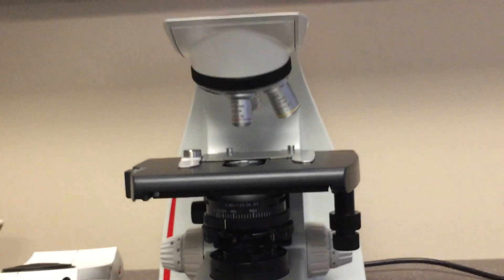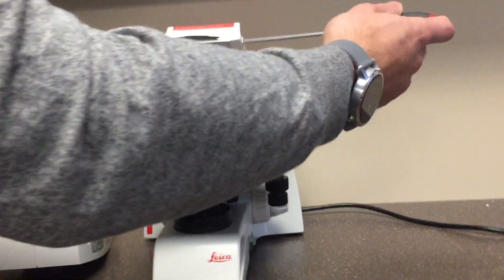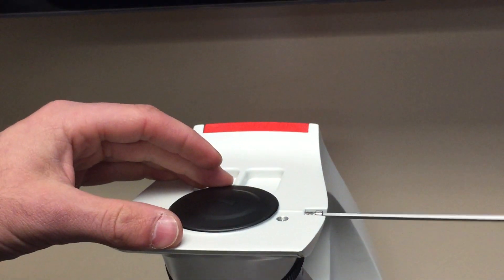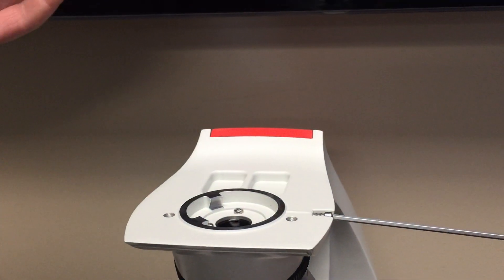Once that is complete, the first step is to remove the cap on the top of the microscope using the included three millimeter wrench. Simply loosen the screw and remove the cap.